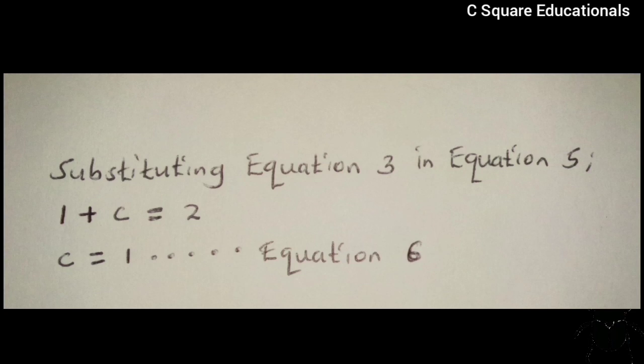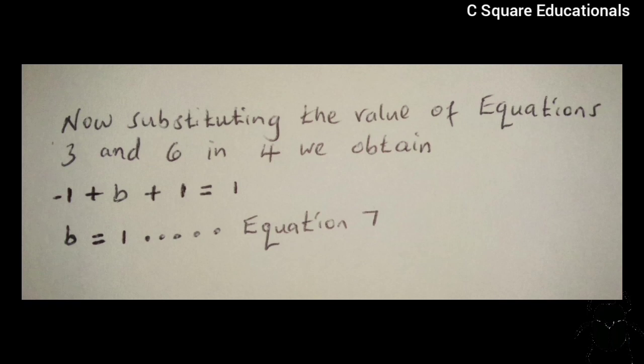Now, substituting the value of equation 3 and 6 in equation 4, we get negative 1 plus B plus 1 is equivalent to 1. Then, doing some simplification, as it is obvious, B is equivalent to 1. Let us call this our equation 7.